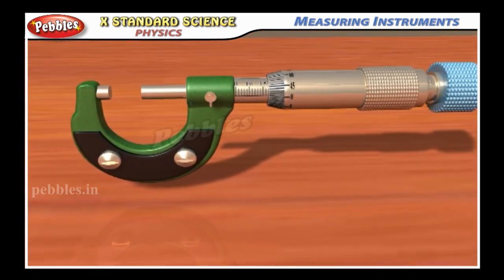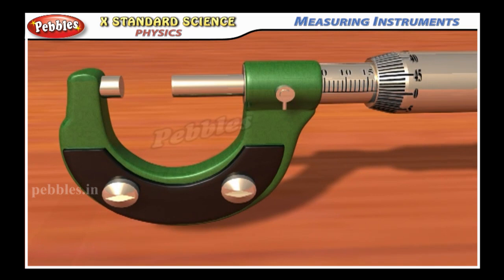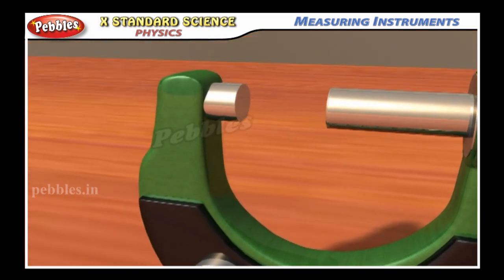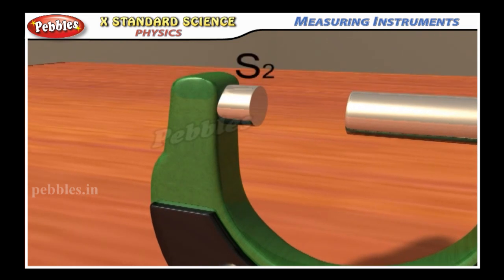The other end of the screw has a plane surface S1. A stud S2 is attached to the other end of the frame just opposite to the tip of the screw.